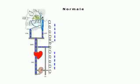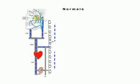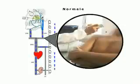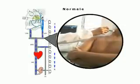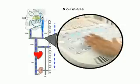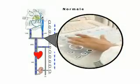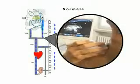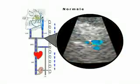In normal condition, the blood flows from the brain and the spinal cord to the heart without changing direction. This is clearly visible at the ecodoppler where the blood flow is shown in blue.